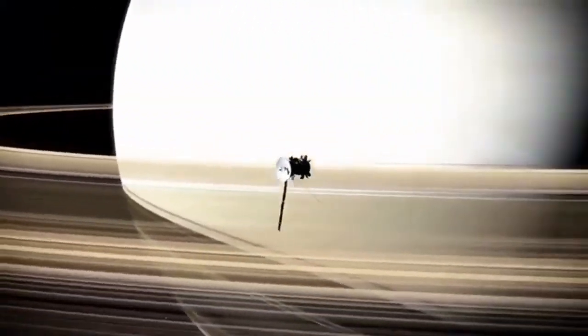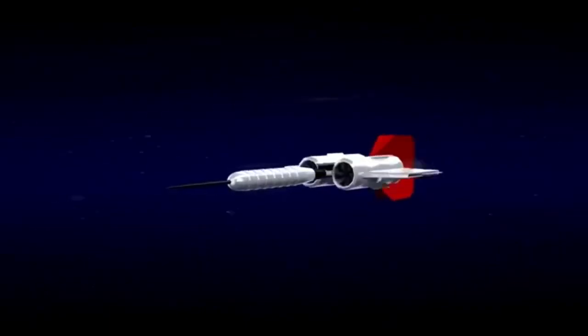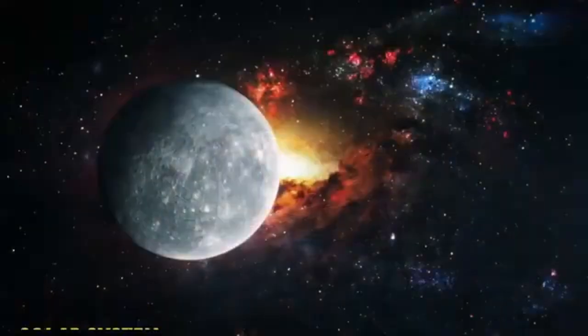In 1977, NASA launched two spacecraft, Voyager 1 and Voyager 2, on a mission like no other to explore the farthest corners of our solar system and beyond.